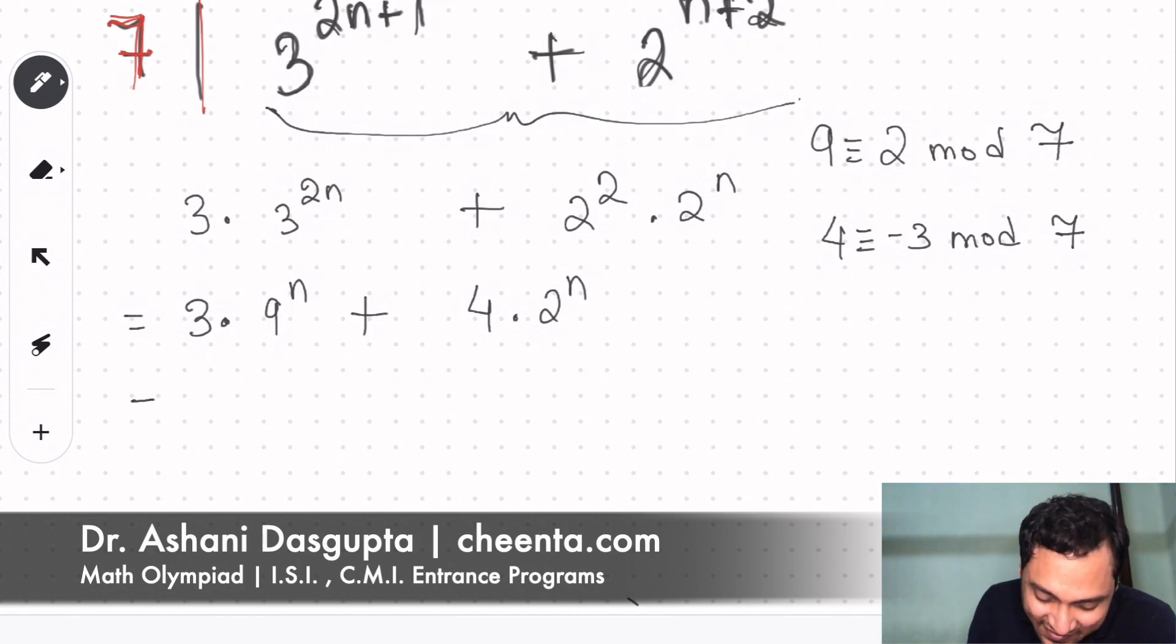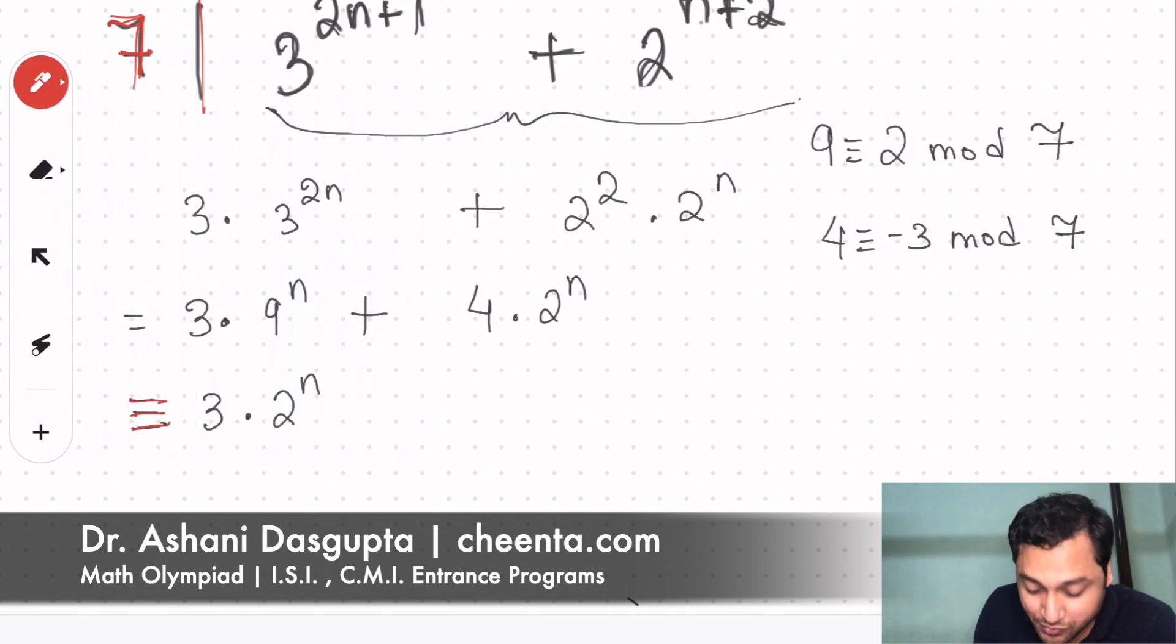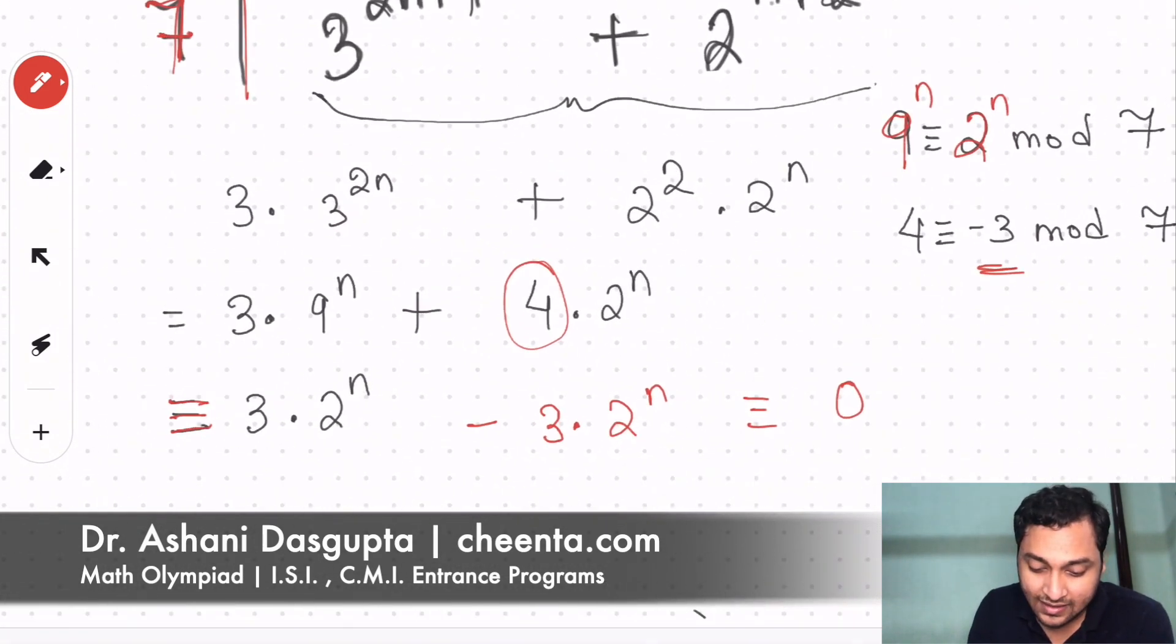So one last step. This is 3 times 2 to the power n. This is congruent to—I shouldn't write equal to—I should write this is congruent to 3 times 2 to the power n. So instead of 9 to the power n, I'm just replacing it with 2 to the power n, and 4 will be replaced by negative 3. So negative 3 times 2 to the power n, which is congruent to 0 mod 7. This is definitely understandable if you know modular arithmetic. So we are done.